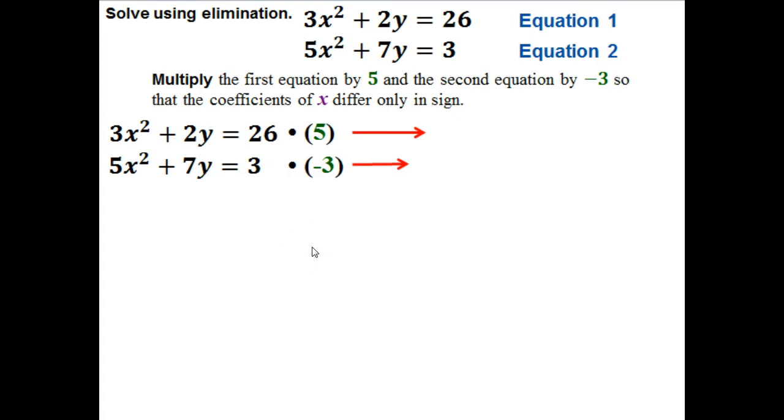So if we do that, now I'm going to multiply 5 by each component here, not just the 3, not just the 2, everything up top. So I do that, and I get my 15x squared, 10y, and then 130.